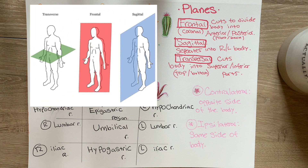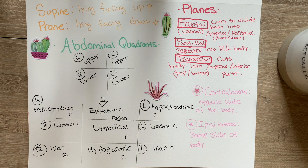The planes are basically different cuts you can make to look at different views of the body. The frontal plane, also known as the coronal plane, cuts the body into anterior and posterior views. The sagittal plane cuts the body into right and left halves. And the transverse plane cuts the body into superior and inferior views.